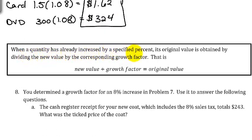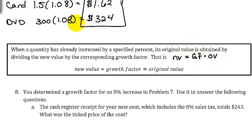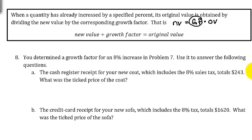When a quantity has already increased by a specified percent, its original value is obtained by dividing the new value by the corresponding growth factor. If the new value equals the growth factor times the original value, then dividing both sides by the growth factor gives: original value equals new value divided by growth factor.